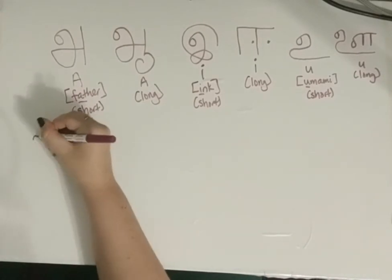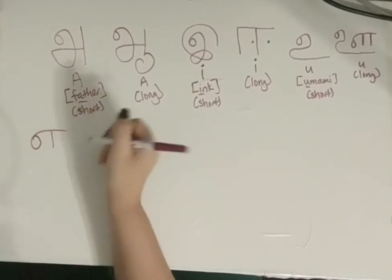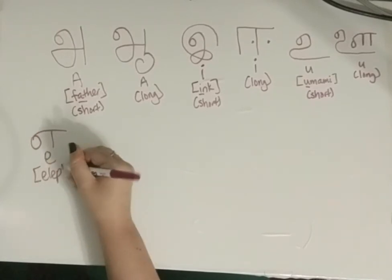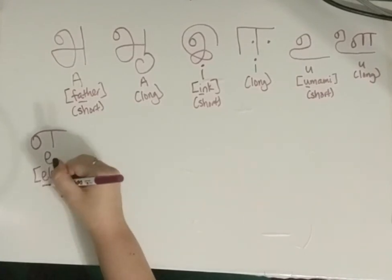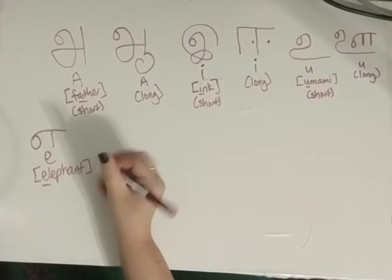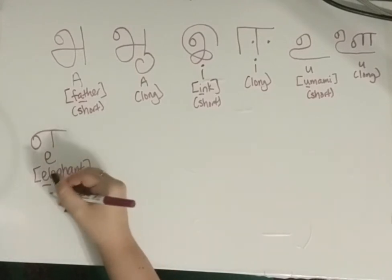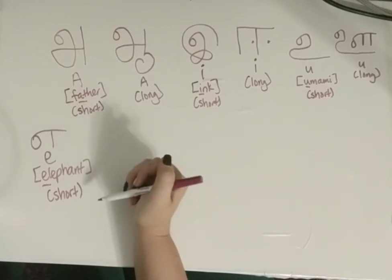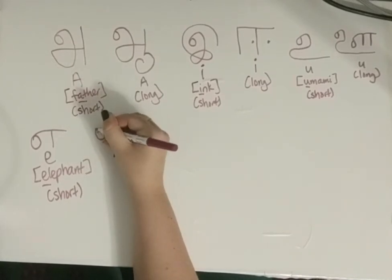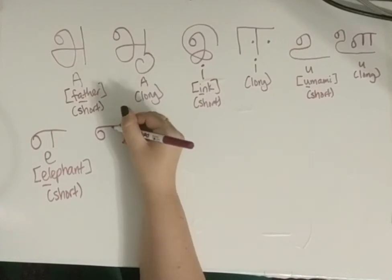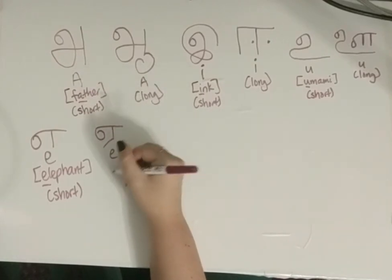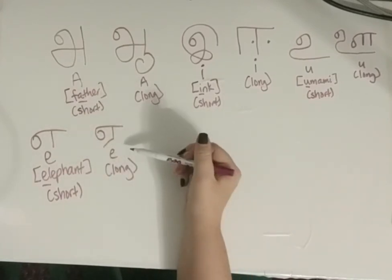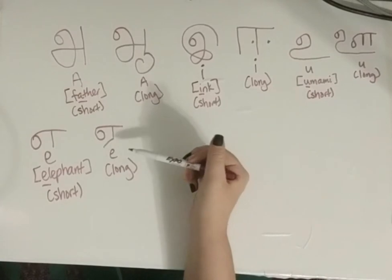This is the short 'eh' as in 'elephant,' and here's the long version — same thing but with a tail. So we have short 'eh' and long 'eh.'